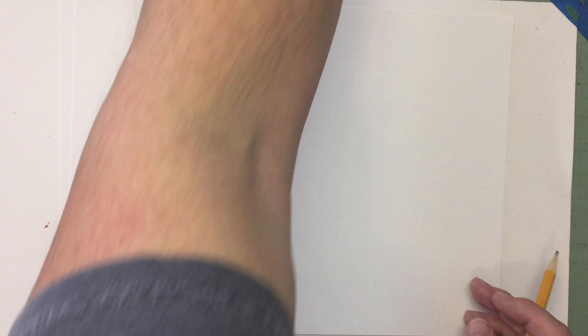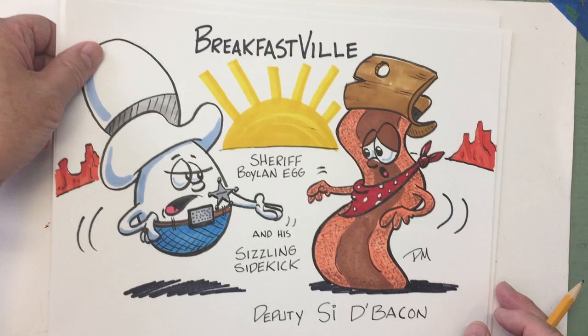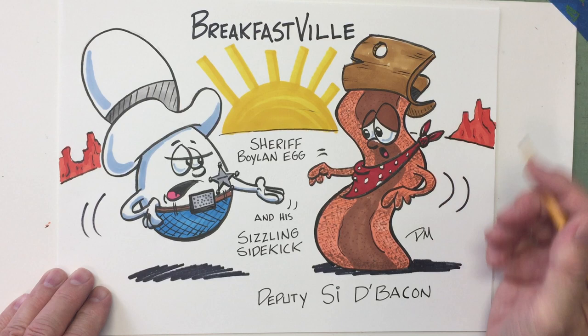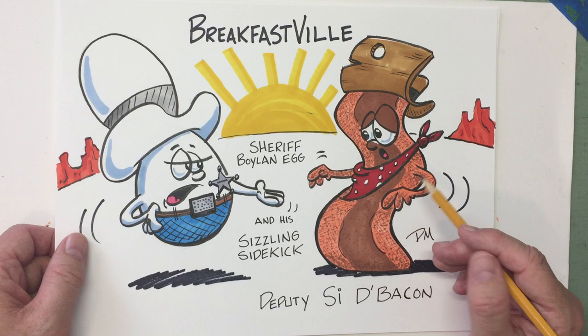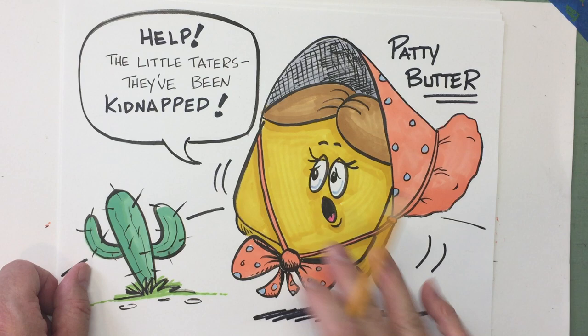So yesterday and the day before, we started talking about some characters. A couple days ago, I created these fun little characters based on food. I love to make food characters. We use personification, we bring things to life that aren't human. So here's Sheriff Boilin' Egg and his sidekick, Deputy Side-a-Bacon. We created those a couple days ago, and then I got the idea to put those into a story. Breakfastville, that's the setting. Something is happening. And here's Patty Butter we created yesterday. Help! The little taters, they've been kidnapped!